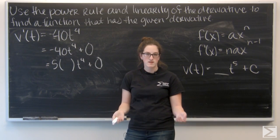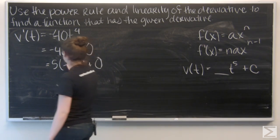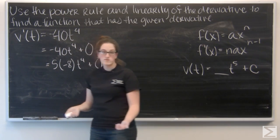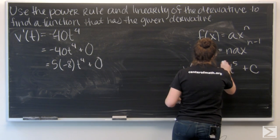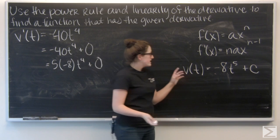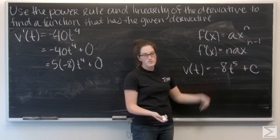Well, now I just need to think about what times 5 makes negative 40. And it's negative 8. So that's going to give me my a. I'll throw it in the blank over here. And I get v of t equals negative 8 t to the fifth plus some constant c.